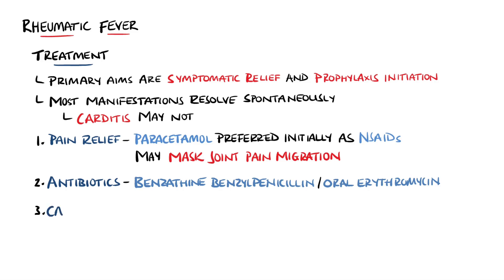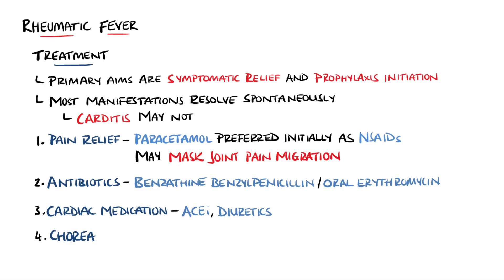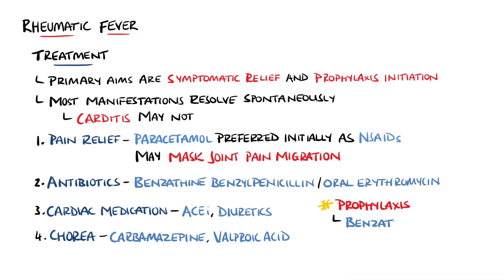Patients with carditis who develop heart failure will require cardiac medication such as ACE inhibitors and potentially diuretics. In patients with chorea, in nearly all instances this will self-resolve within six months, but if the chorea puts the person at risk, then carbamazepine or valproic acid may be started. Secondary prophylaxis includes long-term antibiotic use — the first line being injections of benzathine benzylpenicillin every three to four weeks, or oral erythromycin if the patient is allergic.